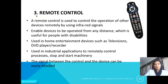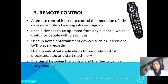The next input device is the remote control. A remote control is used to control the operation of other devices remotely by using infrared signals. It enables devices to be operated from a distance, which is useful for people with disabilities. It is also used in home entertainment devices such as televisions and DVD players, and in industrial applications to remotely control processes. However, the infrared signal can be easily blocked if something is placed in front of it.